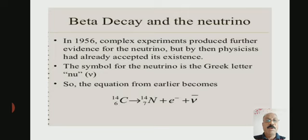The symbol for the neutrino is the Greek letter nu. The equation from earlier becomes—the first equation is carbon to nitrogen plus electron plus neutrino.